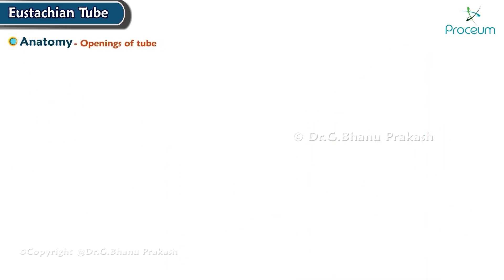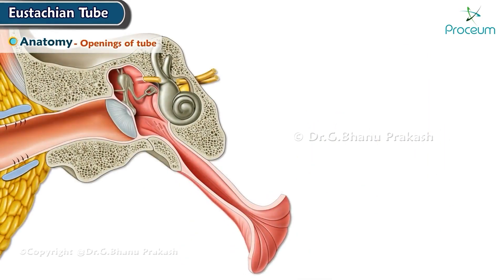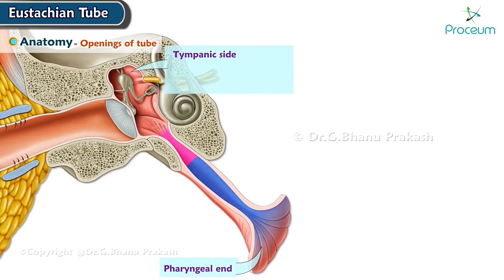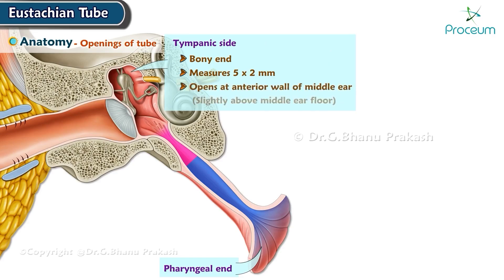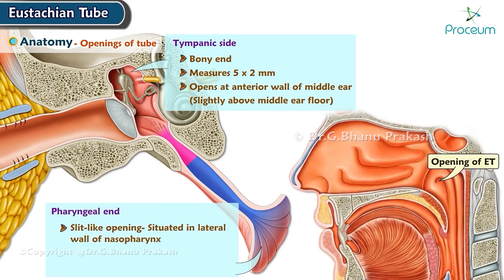Openings of the tube. The Eustachian tube has two openings: one towards the tympanic side and the other towards the pharyngeal end. The tympanic opening is the bony end and measures 5 by 2 millimeters. It opens at the anterior wall of the middle ear, slightly above the middle ear floor.